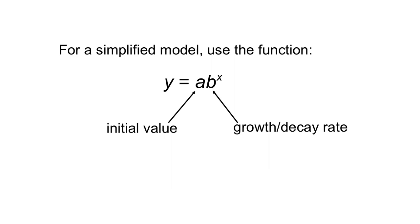Now I will go back to this Desmos graphing calculator in a second. But first, for a simplified model which we're going to use today, we can use this function: y equals a times b to the x. I'm ignoring the c value for now, just to simplify our model. If we're ignoring c, then a would be your y-intercept or your initial value. b, the base of your power, will be your growth or decay rate. We're going to create an equation in the format y equals a times b to the exponent x.